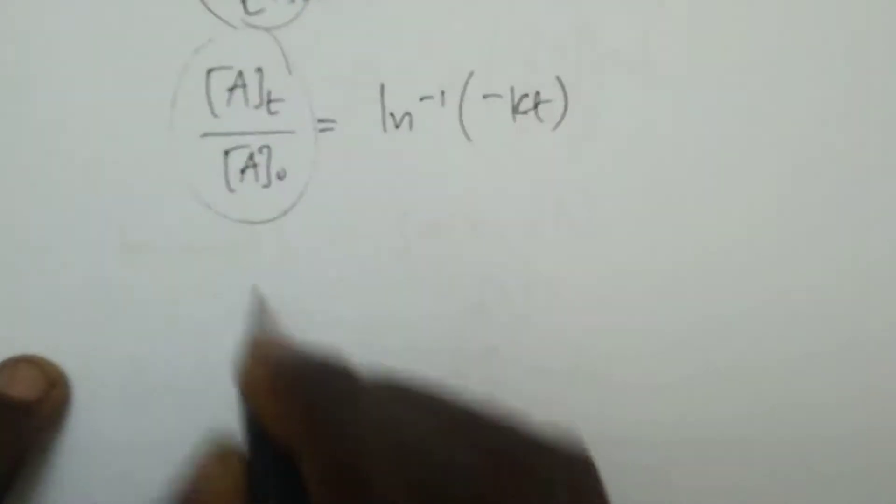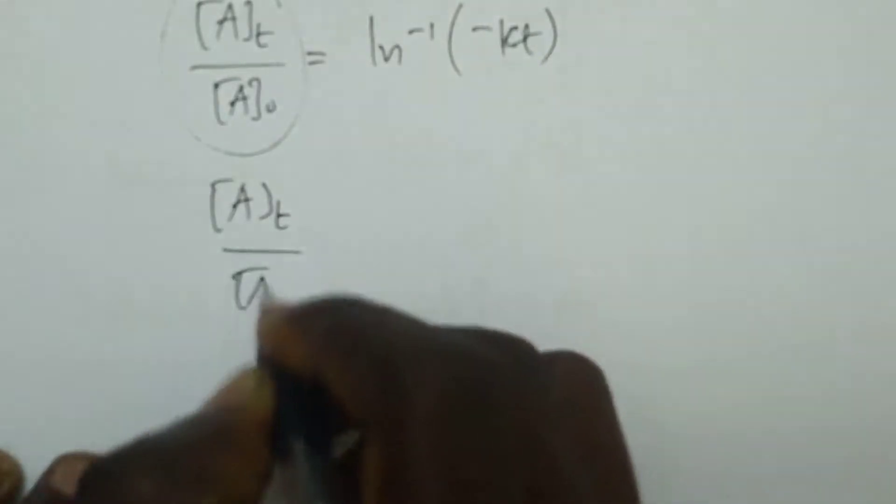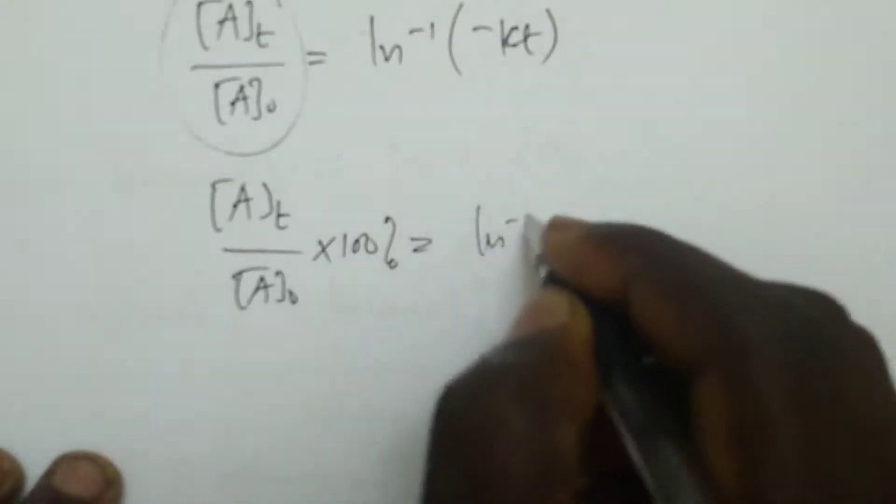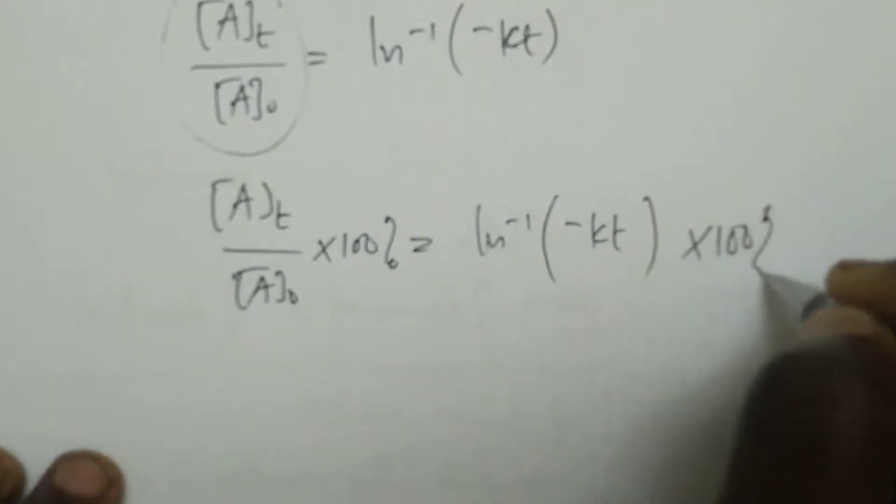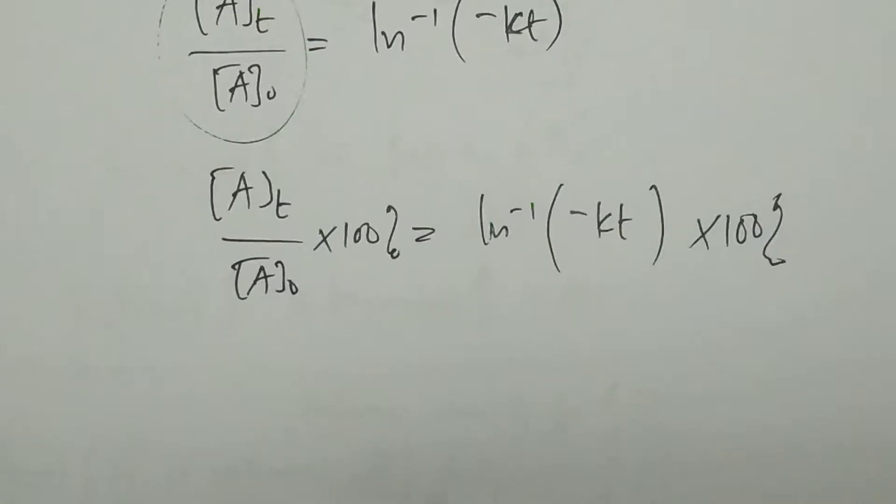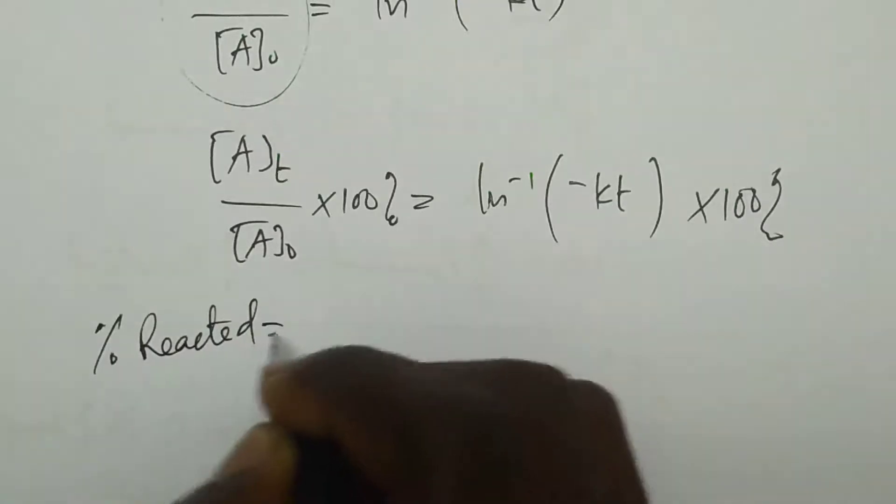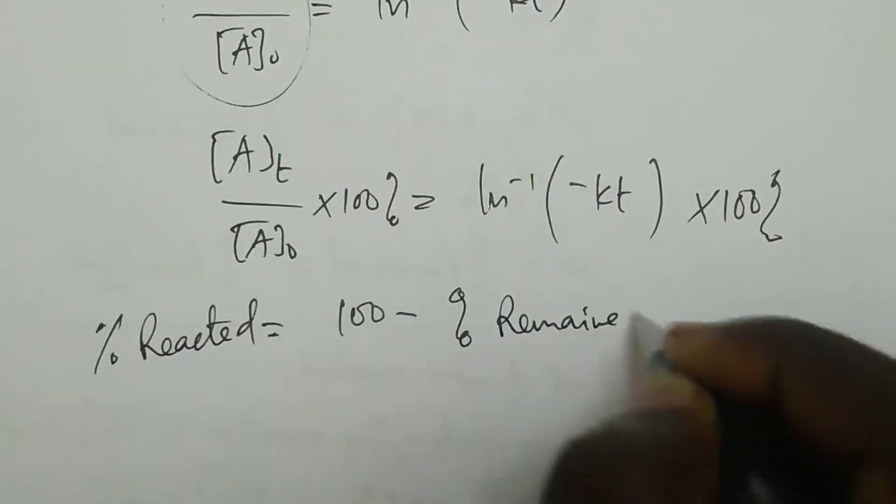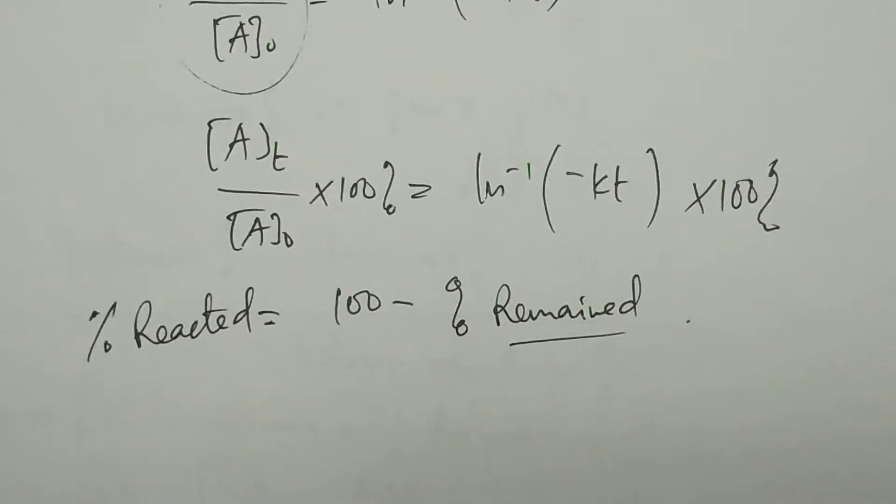To get percentage, we take concentration AT divided by concentration A₀, then times 100 percent. This equals ln inverse of negative KT times 100 percent. That's how you get percentage remained. If the question requires percentage reacted, you say: percentage reacted equals 100 minus percentage remained.